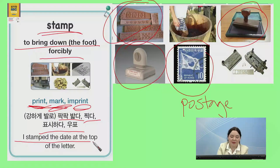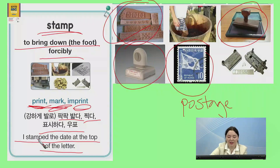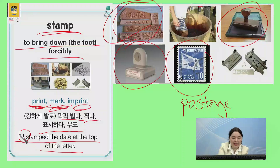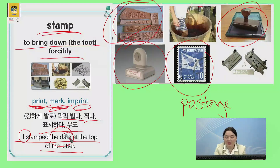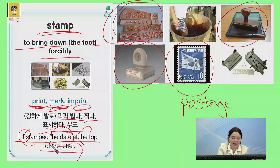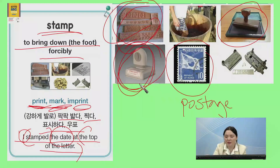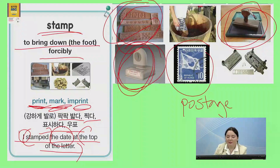So you could say, I stamped the date at the top of the letter. That would be, 나는 날짜를, I stamped the date, 편지의 상단에, at the top of the letter, 표시했습니다. I stamped it. So these types of stamps — 이건 표시해주는 stamp입니다. 나는 날짜를 편지의 상단을 표시했습니다.